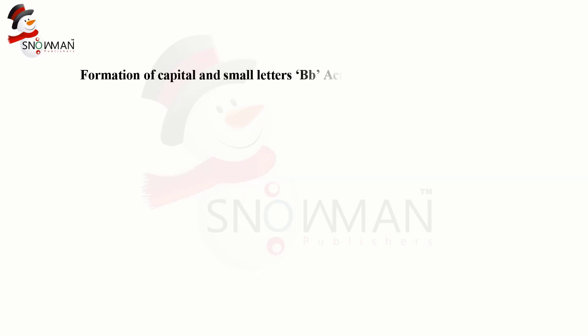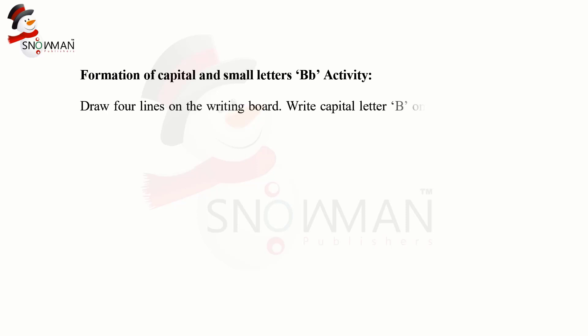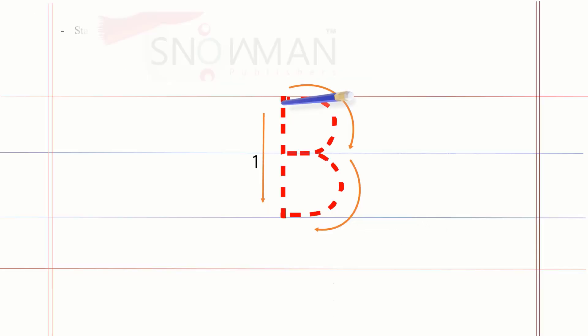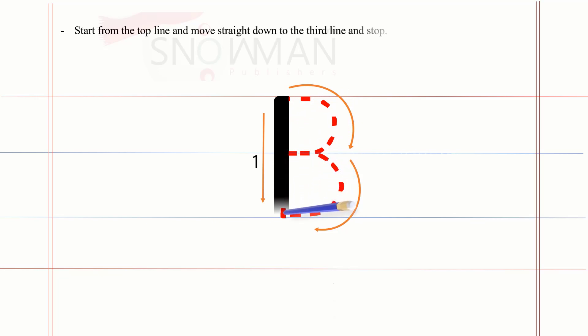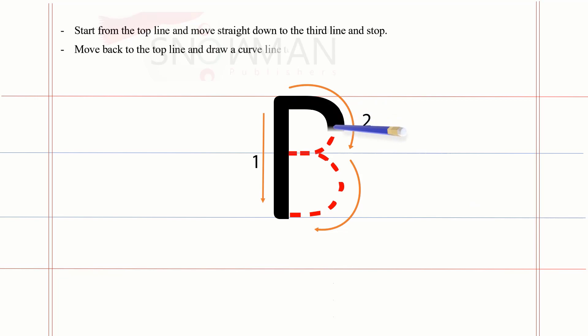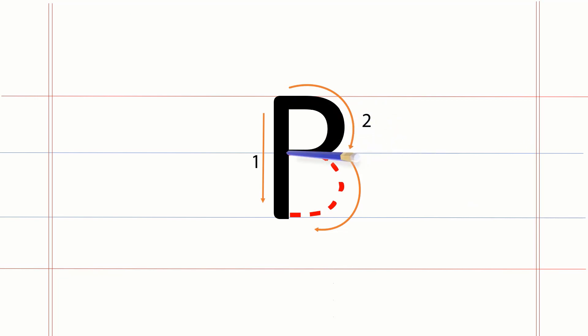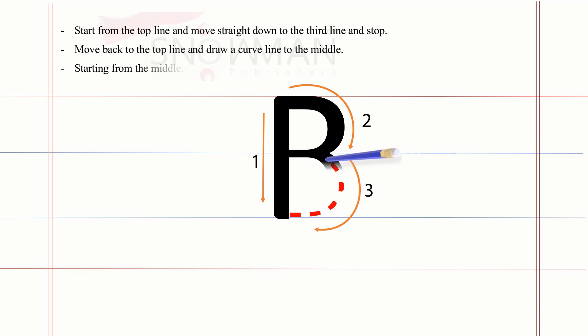Formation of capital and small letters B activity: draw four lines on the writing board. Write capital letter B on the first three lines and give instructions. Start from the top line and move straight down to the third line and stop. Move back to the top line and draw a curved line to the middle. Starting from the middle, draw another curved line to the bottom line.